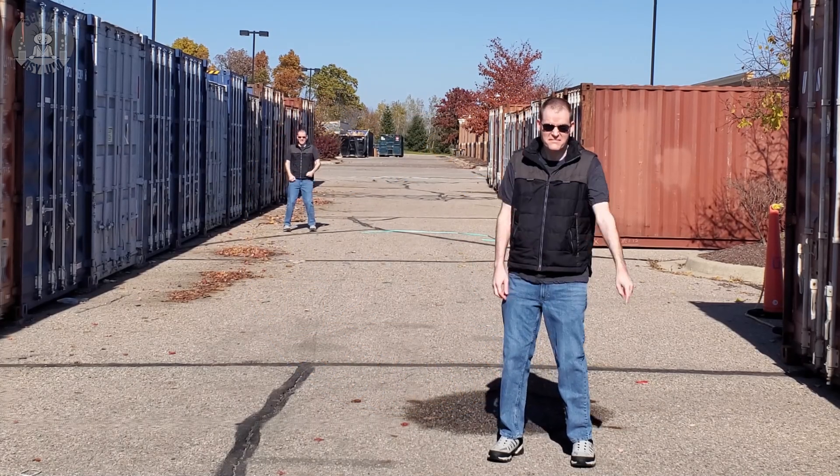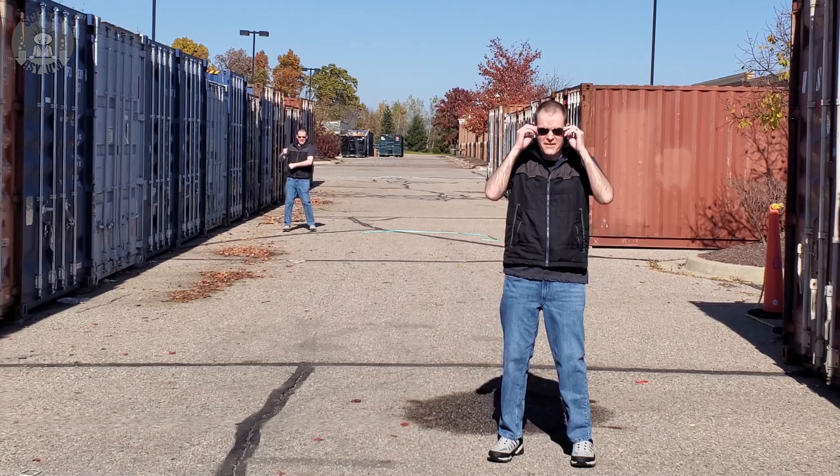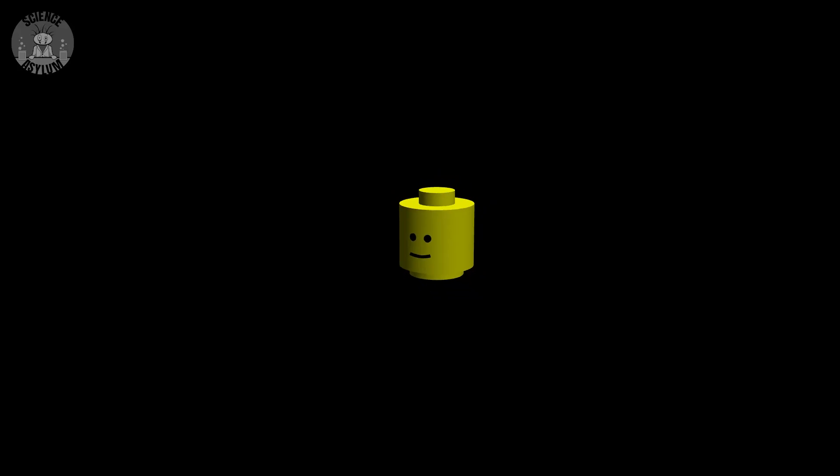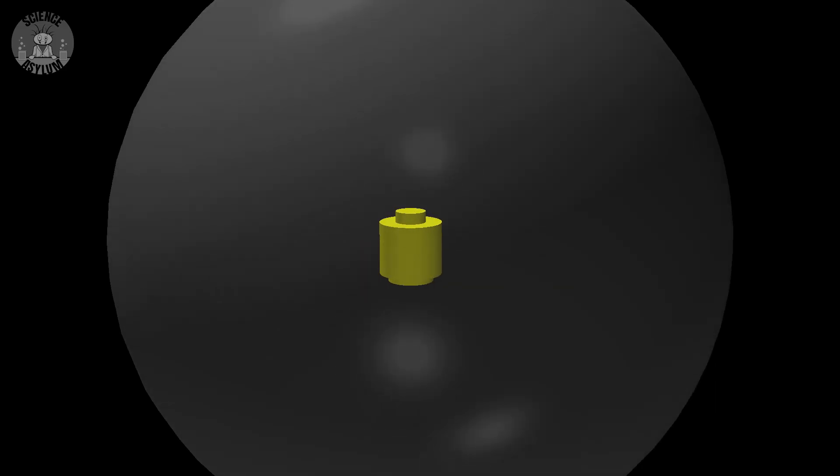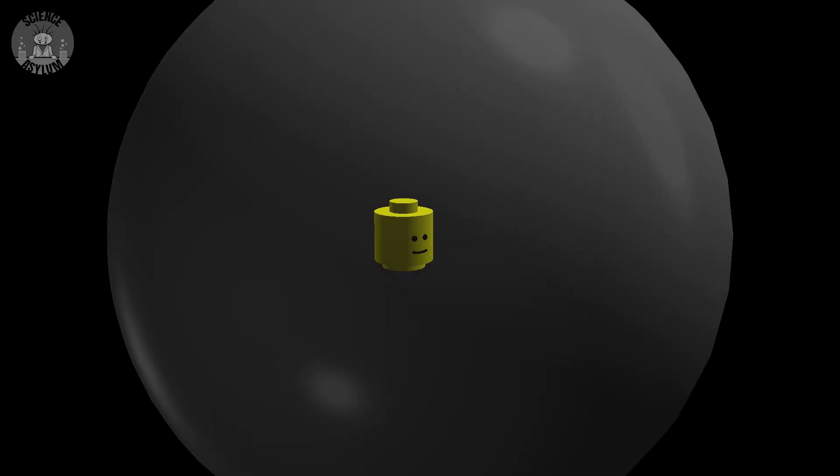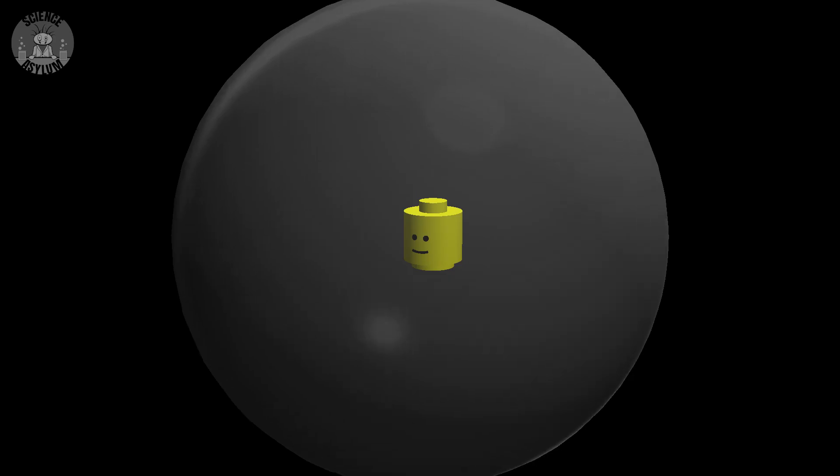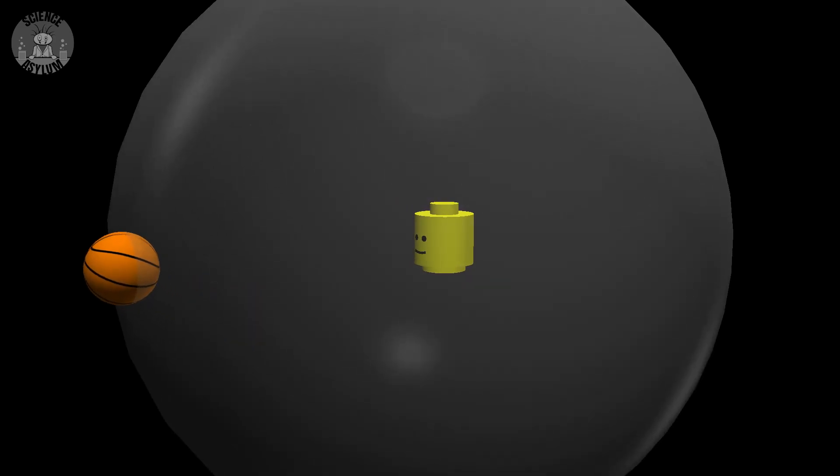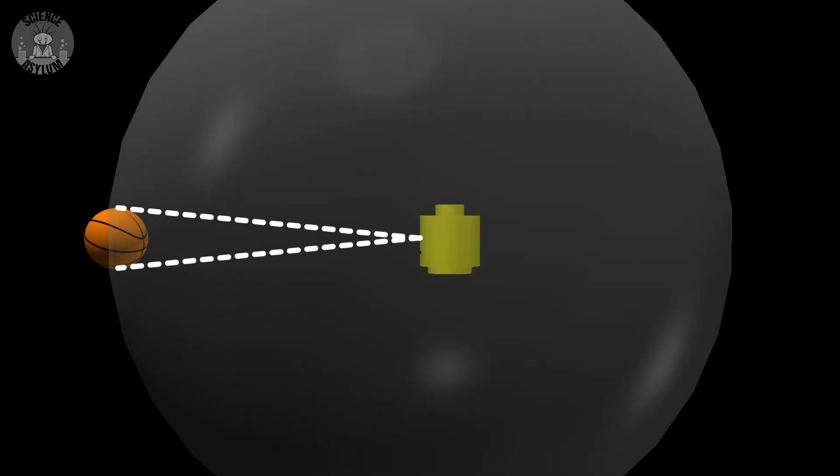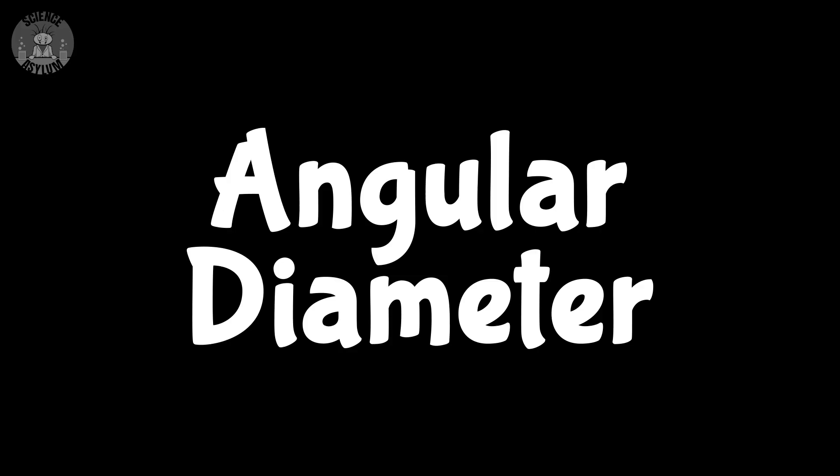This demonstration is an example of angular diameter. It's the idea that if something is farther away, it'll look smaller in our field of view. Imagine there's a sphere around your head. There are 360 degrees all the way around in any direction, regardless of the sphere's size. If you see a ball at some distance, it'll take up a fraction of those 360 degrees. Meaning, you can measure its diameter as an angle, hence angular diameter.